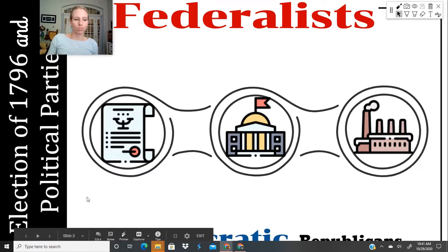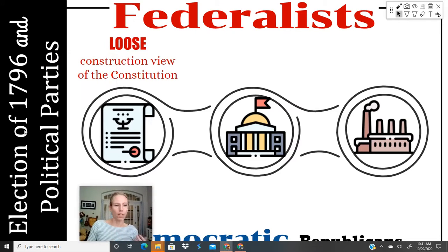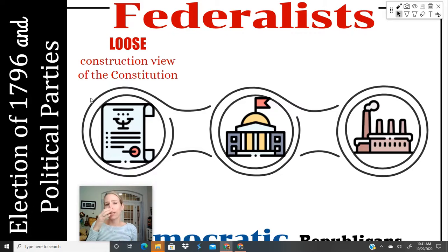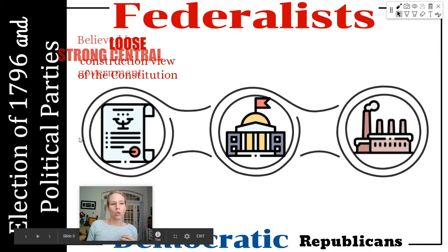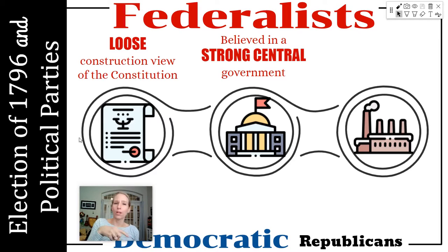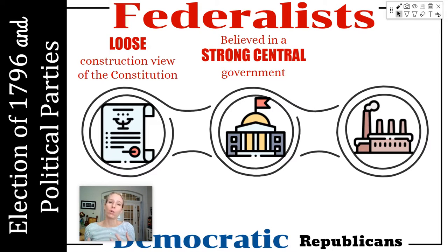First, let's talk about these political parties. Federalists believed in a loose construction of the Constitution, which essentially gives more power to the federal government. For example, with the Second Amendment — the right to bear arms — Federalists would say the Framers never really wanted people to have an RPG or a rocket-propelled grenade, or a nuclear weapon. So that's a loose or more elastic view of the Constitution. Federalists also favored a strong central government, where the government might grow bigger and have more responsibilities than the states.